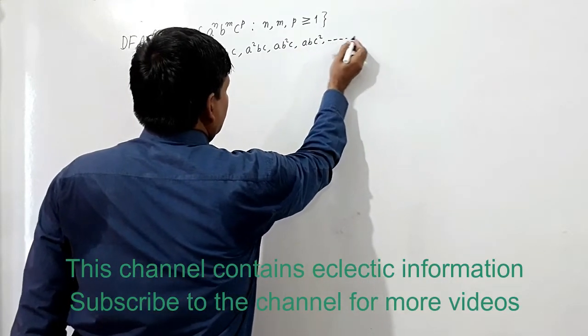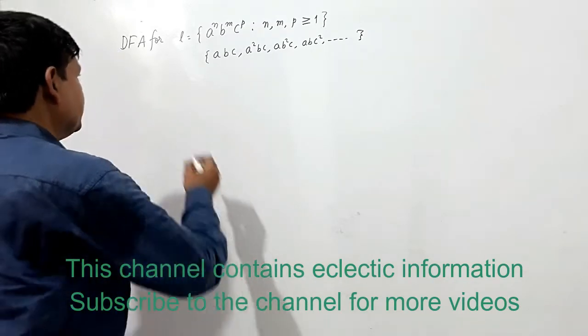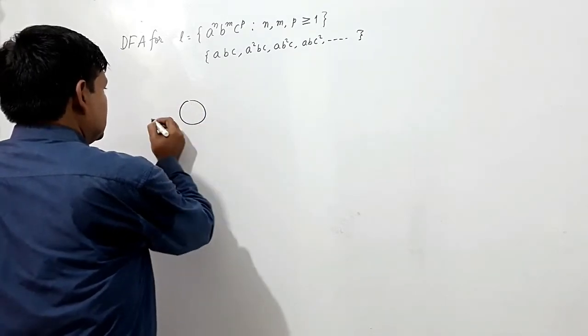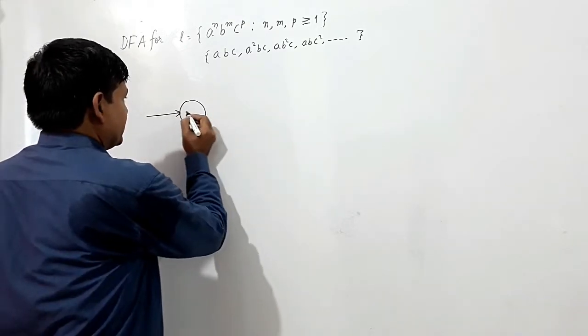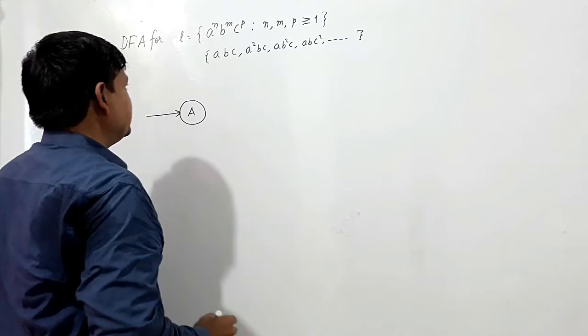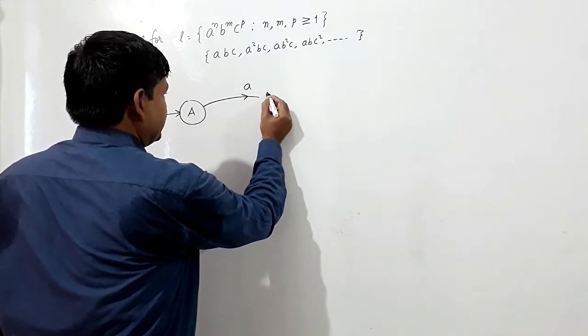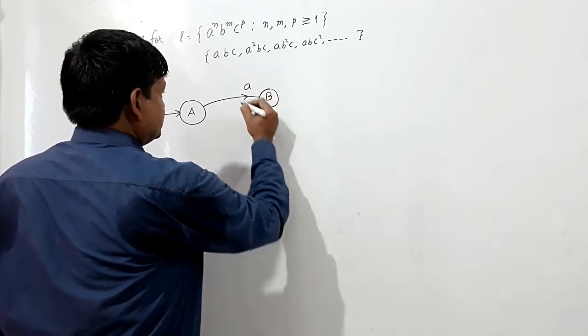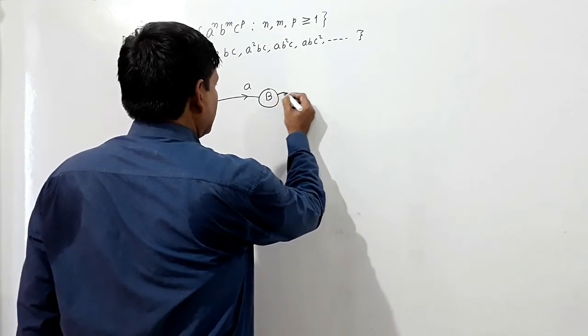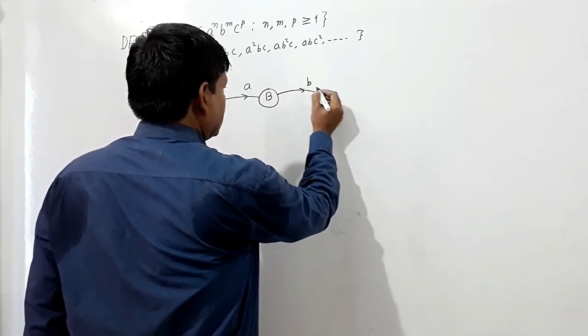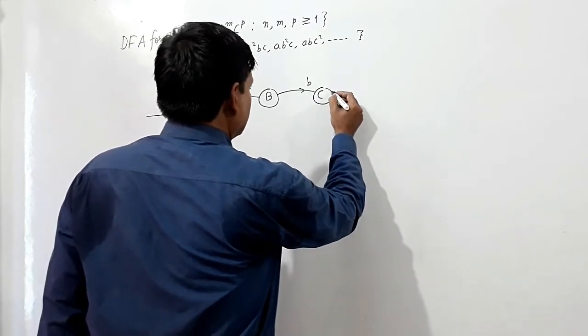This will also be an infinite language. Now we shall have an initial state. If A is the initial state, at A I am reaching B, then at B I am reaching C. If one c comes I should reach D, and this D should also be the final state.